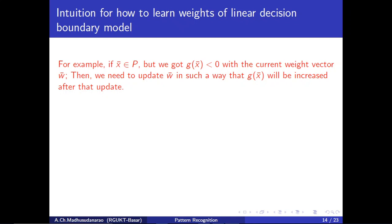For how to learn weights: if x-bar belongs to P (class 1) but we got g(x-bar) < 0 with the current weight vector w-bar, then we need to update w-bar such that g(x-bar) increases after the update. So if x-bar belongs to the positive class, we should satisfy g(x-bar) > 0, but with current weights we got less than 0. We need to modify the weights to increase this value above 0 after a few iterations.